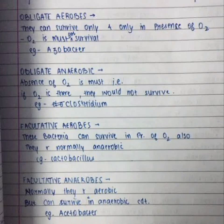Now for obligate anaerobes — these organisms do not need oxygen. In fact, if they receive oxygen they will die. They flourish and thrive in the absence of oxygen — that environment is what they require. Absence of oxygen is a must for them. A very important example is Clostridium.